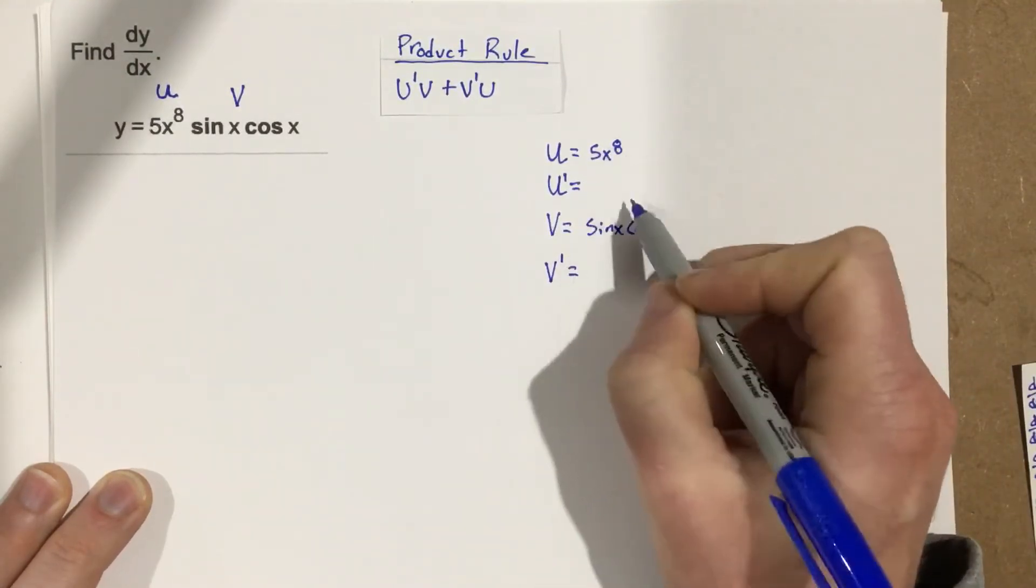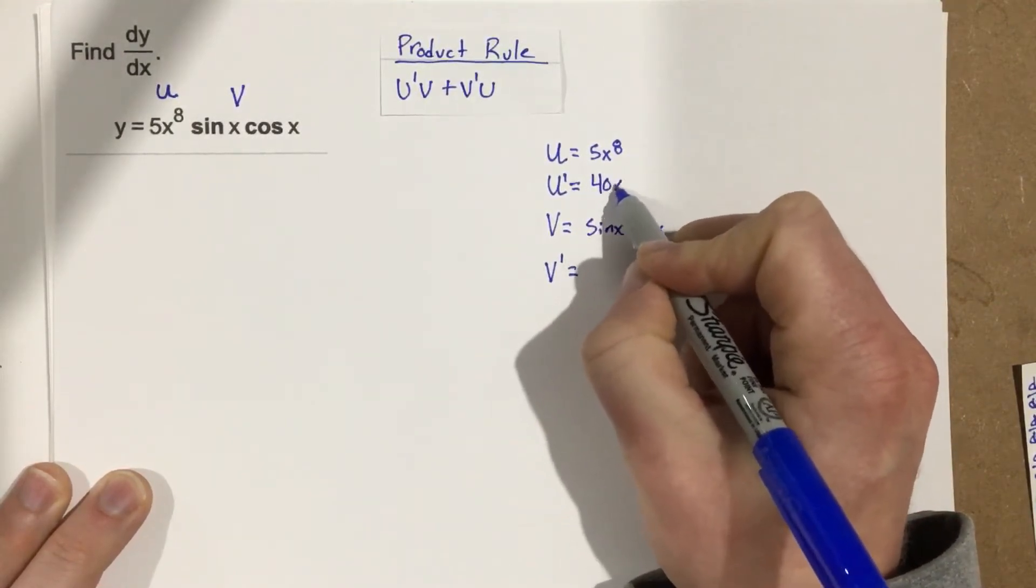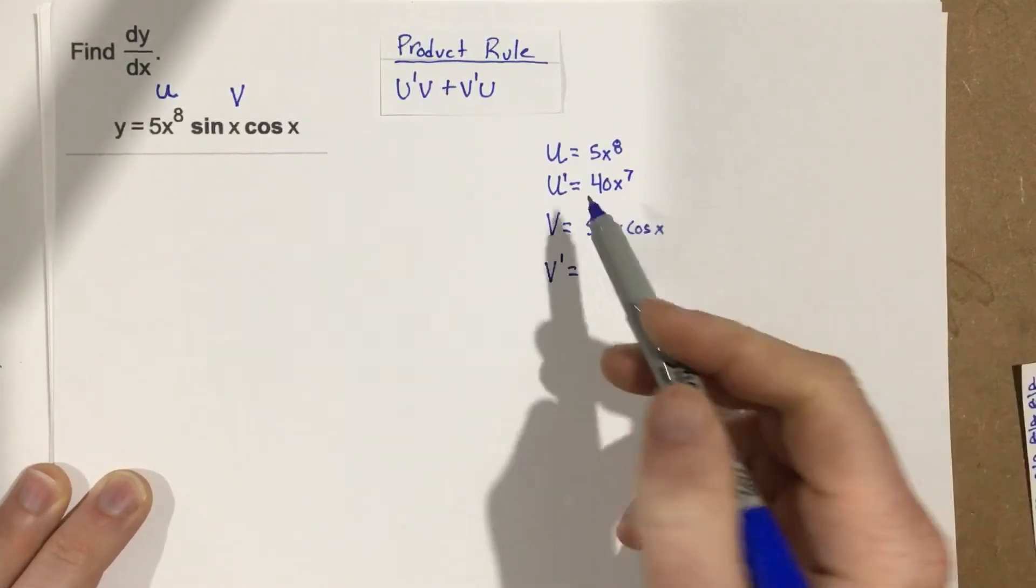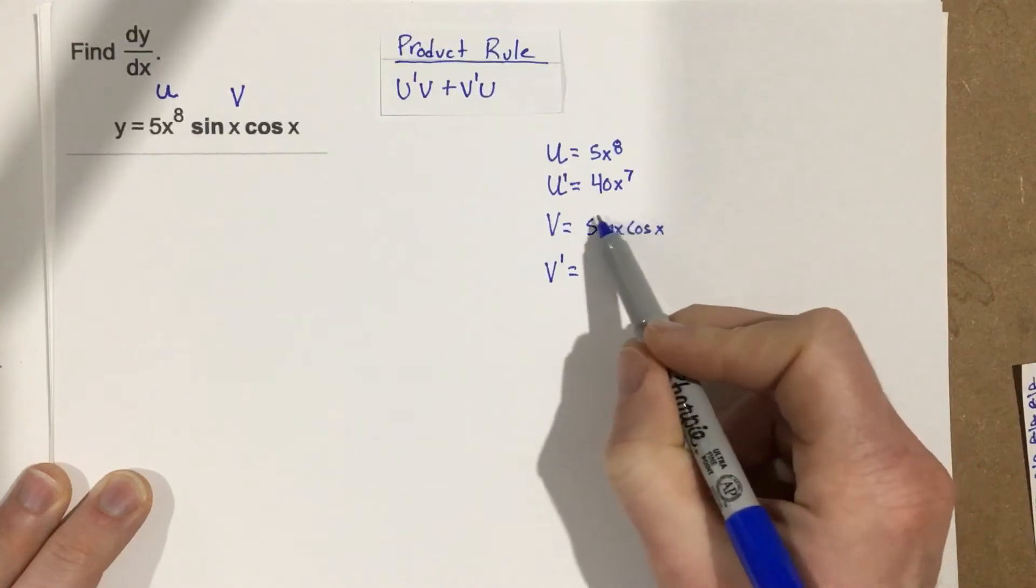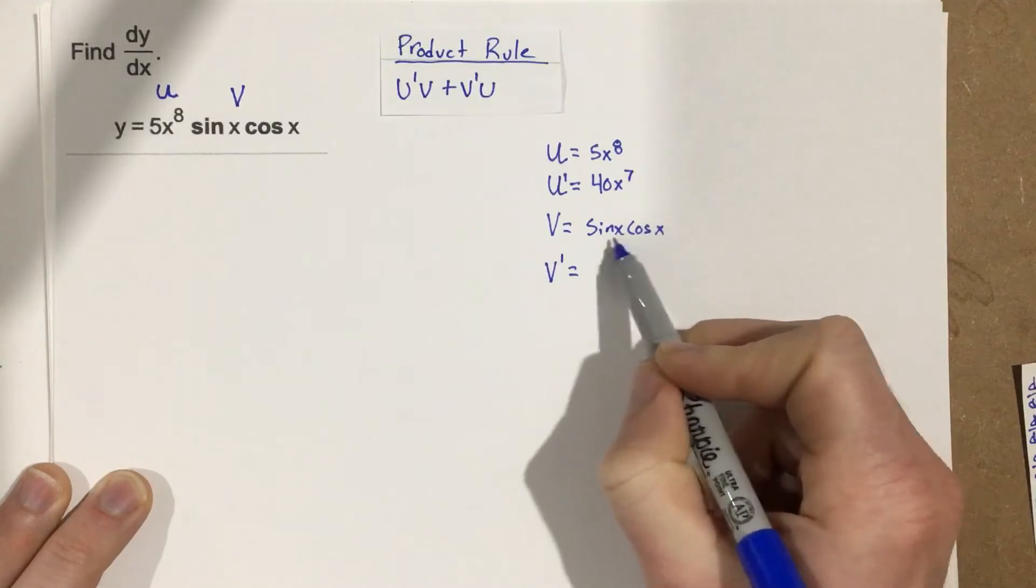Now the derivative of 5x to the 8th is very easy. 8 comes to the front. That's 40x to the 7th. And this is where we end up using, so we're doing the product rule here, right? And this is where we end up using the product rule again because we have to actually find the derivative of v.